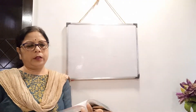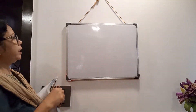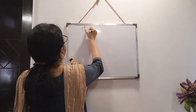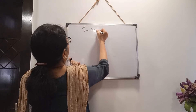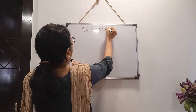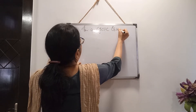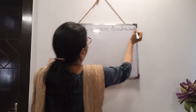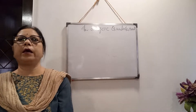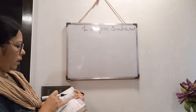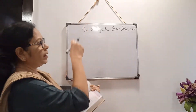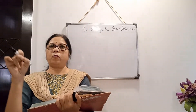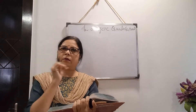Hello students. Now we will study a theorem related to cyclic quadrilateral. What is the meaning of cyclic quadrilateral? That means the quadrilateral will be inside the circle, and the vertices of the quadrilateral will be on the circumference of the circle.